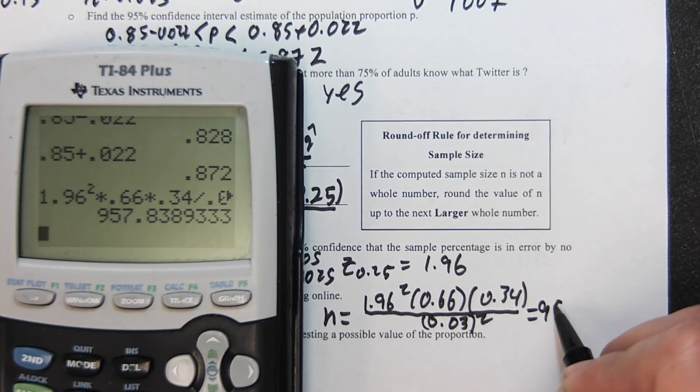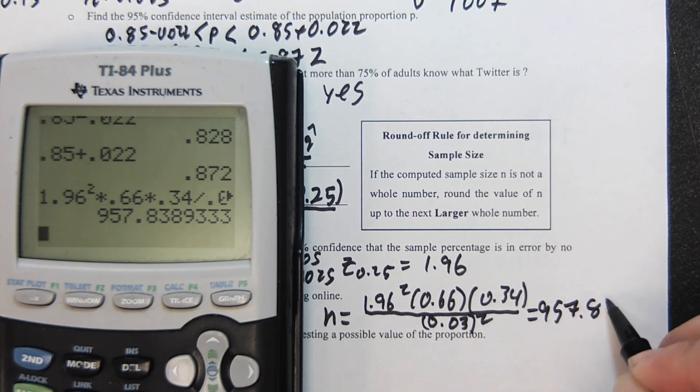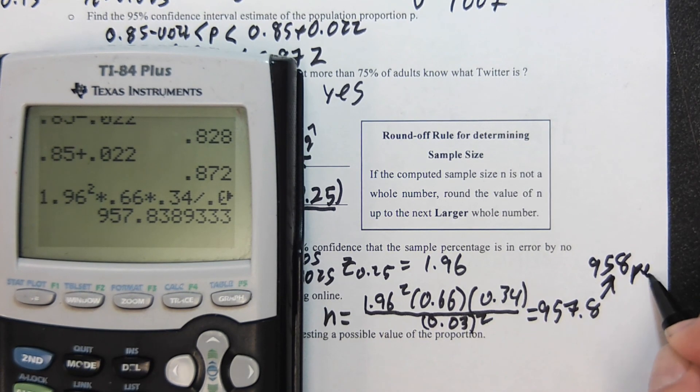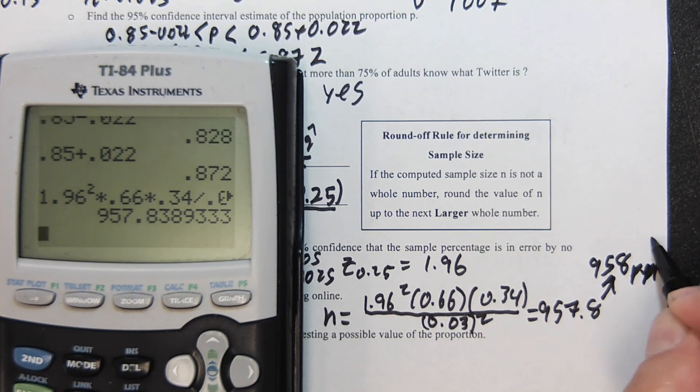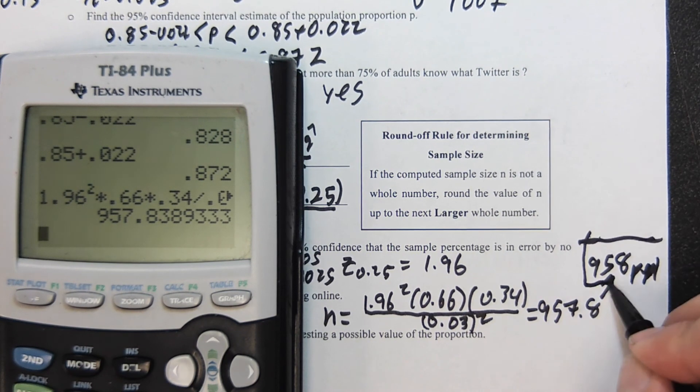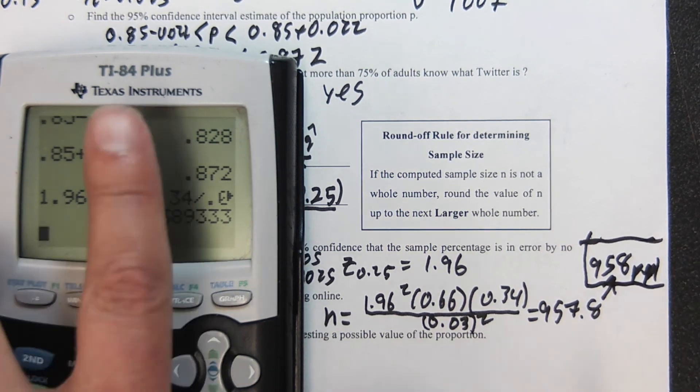1.96 squared times 0.66 times 0.34 divided by 0.03 squared. This is 957.8, and again we always round up, so 958 people. This is with a p hat known. Again, double check all that with your calculator.